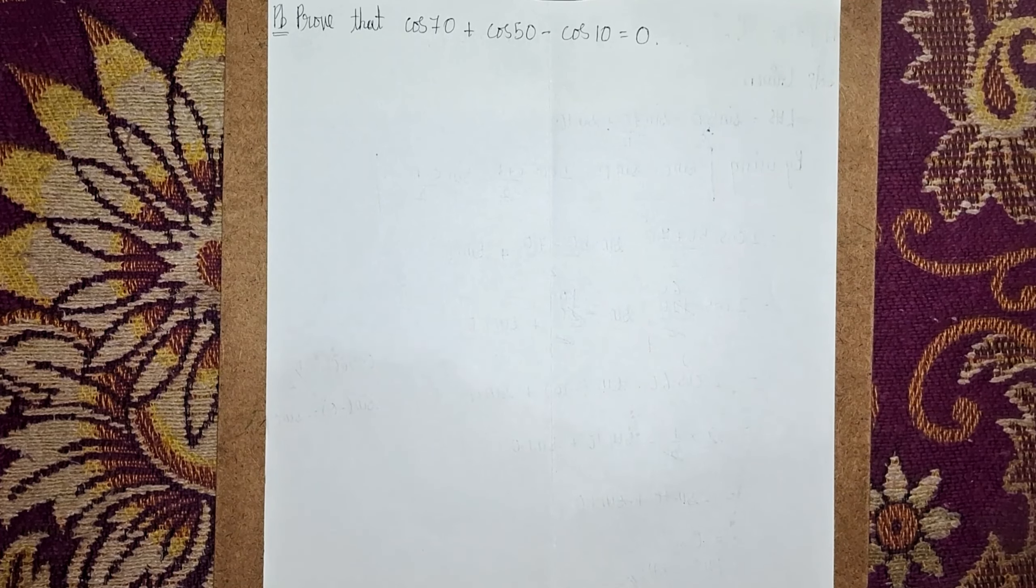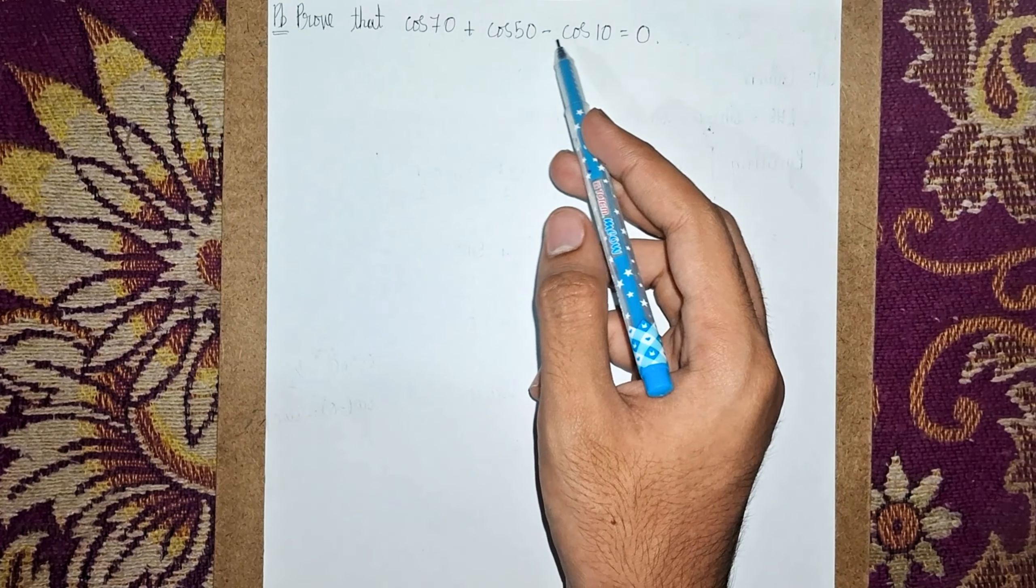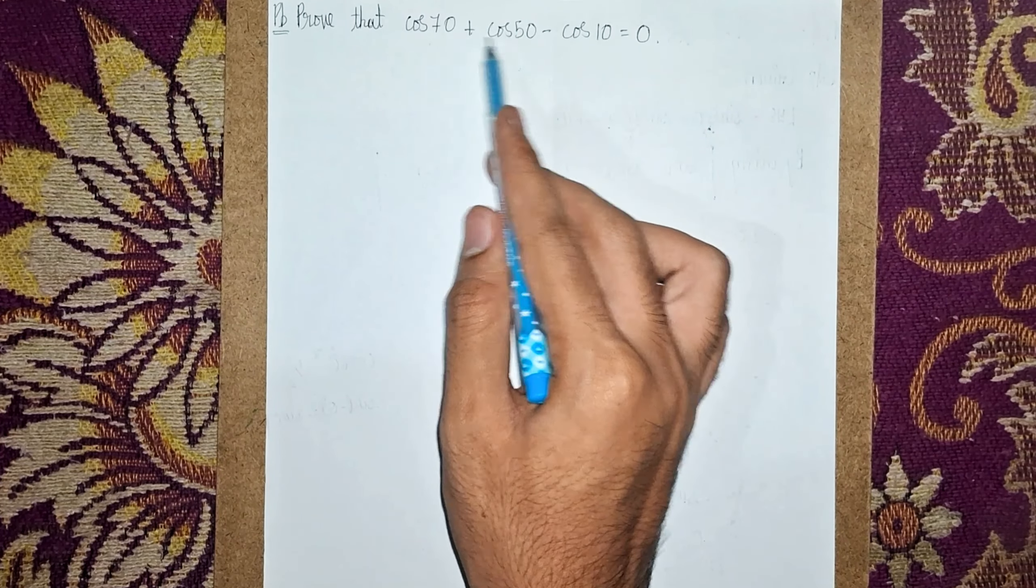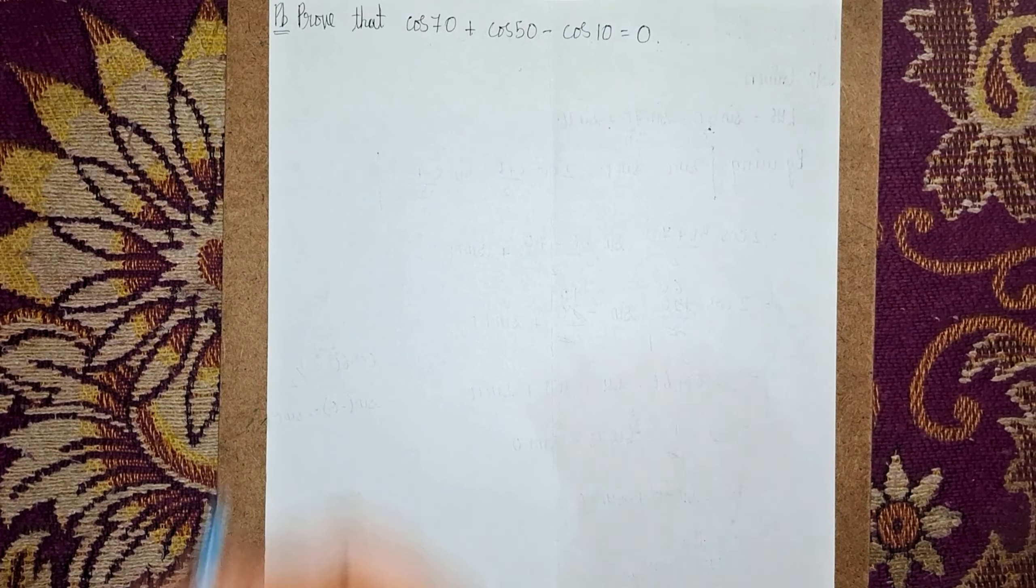Welcome back to my channel. This question: prove that cos70° + cos50° - cos10° = 0. So when we solve this question, we get the answer is zero. Okay, so first write the solution.